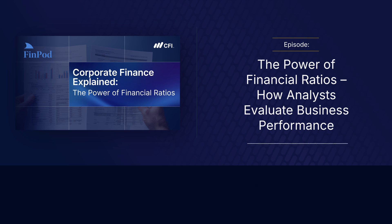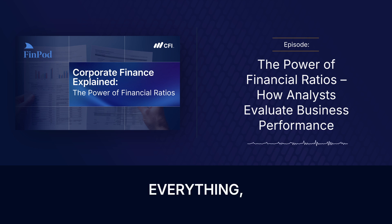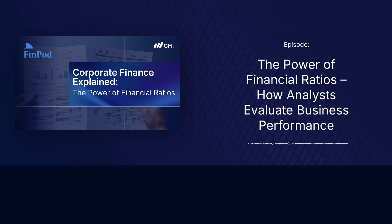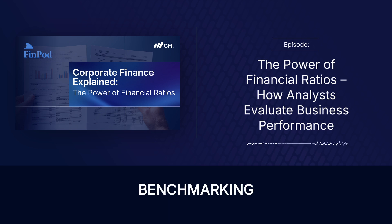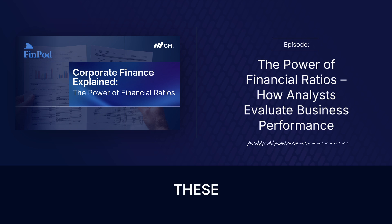Let's unpack this and see how these simple indicators reveal pretty much everything about a company's health. Ratios matter so much because context is everything. Revenue by itself doesn't tell you much — just a big number — not until you compare it to costs, or assets, or the equity shareholders have put in. Ratios give you that vital context for benchmarking against competitors and seeing trends over time.